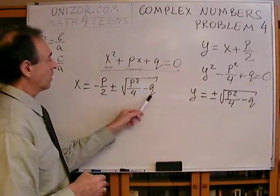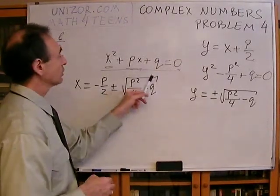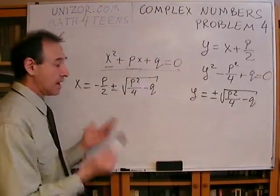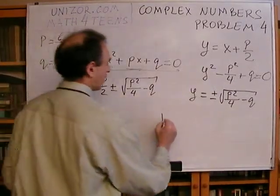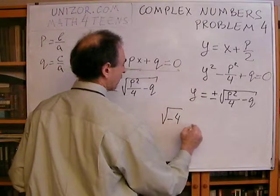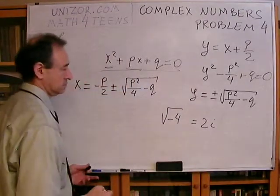If, however, we have a negative number here, then the square root of this negative number is i with some kind of a real coefficient. For instance, square root of minus 4, for instance, is 2i. Right?